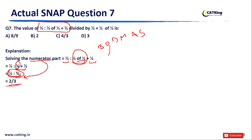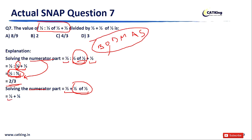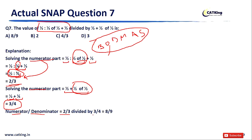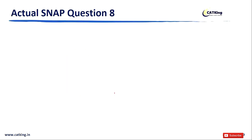Now solving the denominator: 1/2 + 1/2 of 1/2. Again solving 'of' first: 1/2 of 1/2 = 1/4. So 1/2 + 1/4 = 3/4. Now, numerator divided by denominator: (2/3) ÷ (3/4) = 8/9. Hence the correct answer is option A: 8/9.